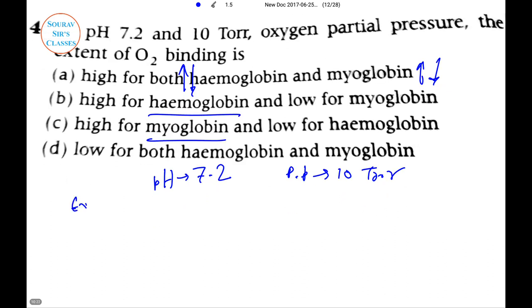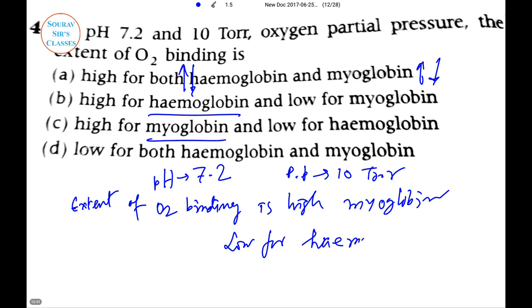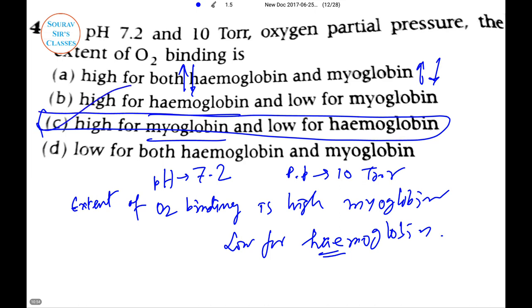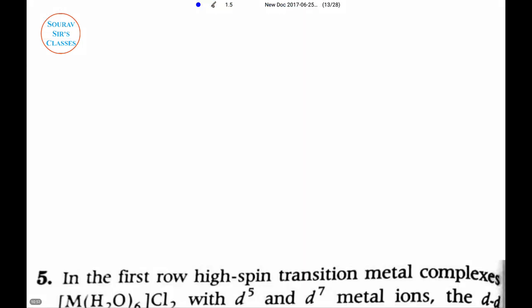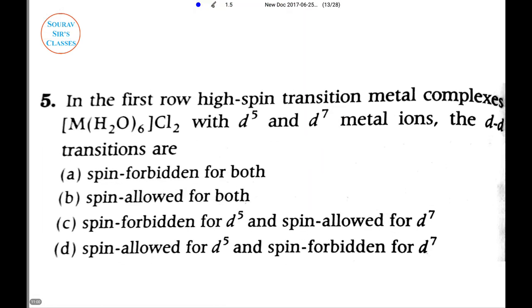So at pH which they have given as 7.2 and partial pressure equal to 10 torr, we can say the extent of O2 binding is actually high for myoglobin and low for hemoglobin. Mind the spelling as well - H-A-E. So here our option is C.